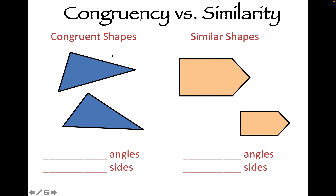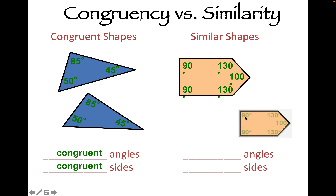Let's recap congruence versus similarity. Congruent shapes have congruent angles and congruent sides — all three angles are the same, and if you measure each side and compare it to the corresponding side, they will be the same also. Similar shapes look like the same thing but one is a bigger or smaller version of the other. They have congruent angles, but their sides are not congruent — they are proportional. That means every side must grow by the same amount. You cannot double one side and triple another; if you double one side to create the new shape, you must double every other side. That's called proportionality, and that's how shapes remain similar.